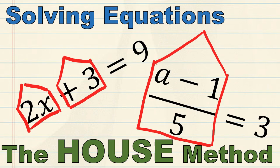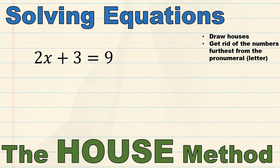Basically you draw houses — you can see some houses I've drawn here in red — and I've drawn them around each term in the equation. There are two steps: the first step is to draw houses, and the second step is to get rid of the numbers furthest from the pronumeral. In case you don't know what the pronumeral is, it's basically the letter — in this case it's the letter x.